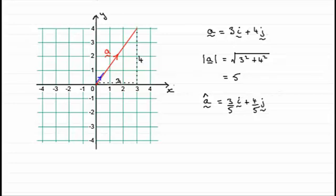So basically, what we're saying is that to get a unit vector a hat from any vector a, all you need to do is take that vector a and divide it by the magnitude of that vector a. And this is a result that you should try and learn.